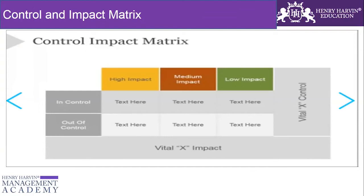The next item is the Control and Impact Matrix, another high-impact tool used to prioritize causes. As you can see in the diagram, we have 'in control' and 'out of control' on one axis, and high, medium, and low impact on the other. We list all the identified causes and categorize them accordingly. The causes we prioritize are those which are high impact and in control, as these will give us results most quickly.